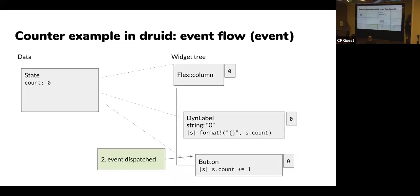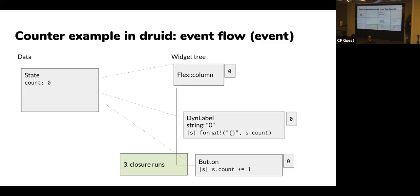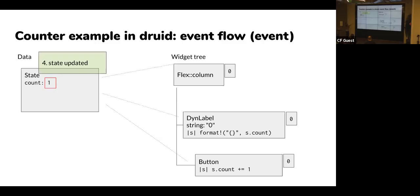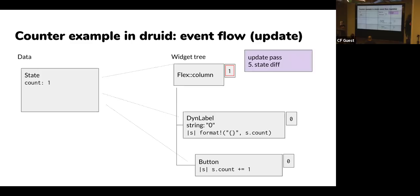The event gets dispatched — to know you clicked the button you actually need the geometry, which is also stored in those widget pod structures. The event goes down to the button; the button might update its own state to show it's been clicked, but what we care about is that it runs that closure. The button owns that closure, and the closure says s.count += 1. So when it runs that closure it has a mutable reference to the app state and just increments that state — now count is one. That's the event propagation phase.